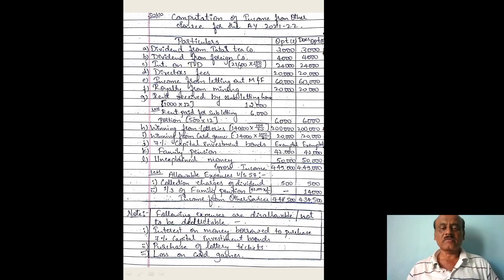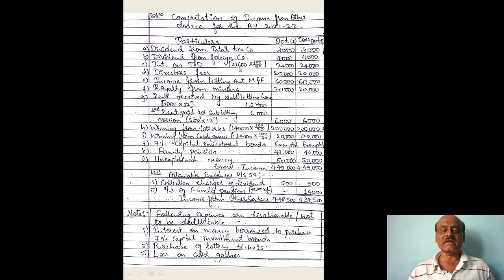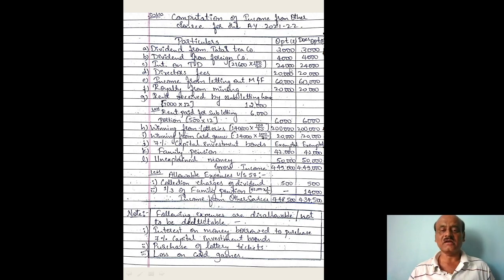Interest on term deposit — this is net, so we need to gross it up. Net interest into 100/90: net interest is Rs. 21,600, so gross = 21,600 × 100/90 = Rs. 24,000.